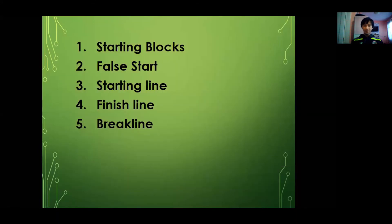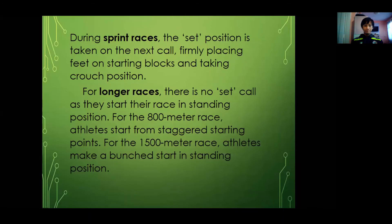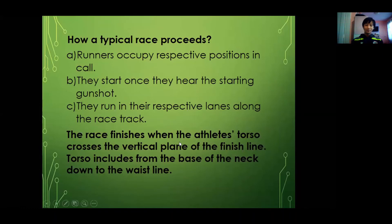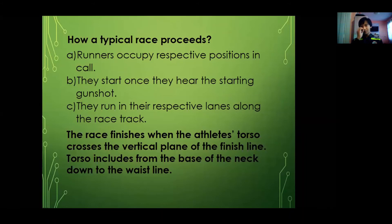For example, if two runners finish almost at the same time and one has a larger chest, their chest crosses the finish line first — and that person wins. For women, if two runners finish almost simultaneously, the one whose torso crosses first wins. So from shoulder down to the waistline is what matters. If only your arms or hands cross, it's not a finish.